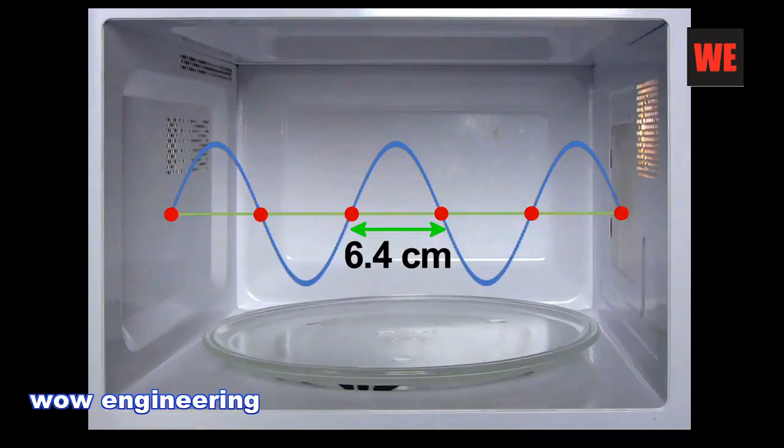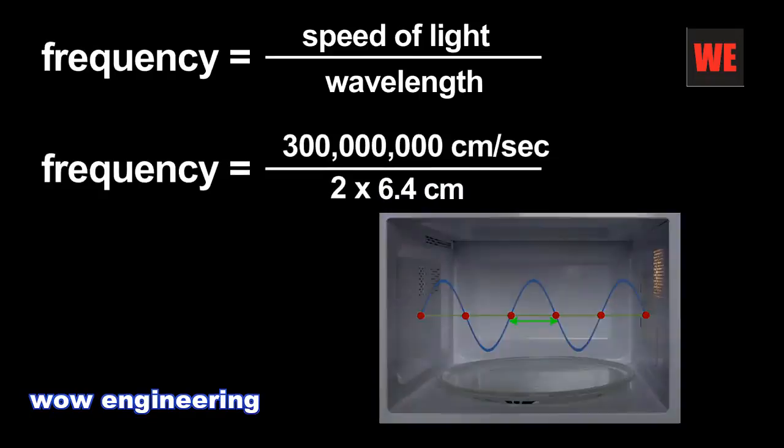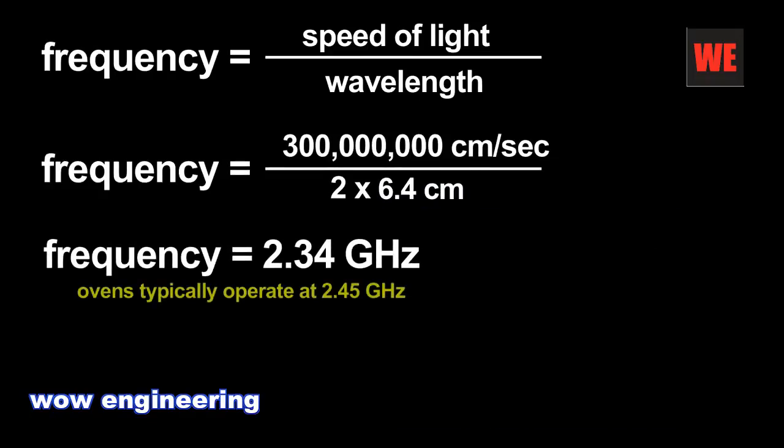Using that wavelength, I can estimate the microwave radiation's frequency. The frequency is related to the wavelength by the speed of light. I get an answer that only has a 4 or 5 percent error. Not bad for this primitive measurement.